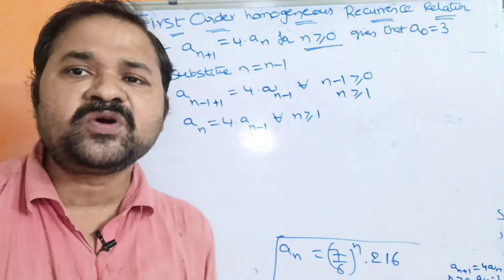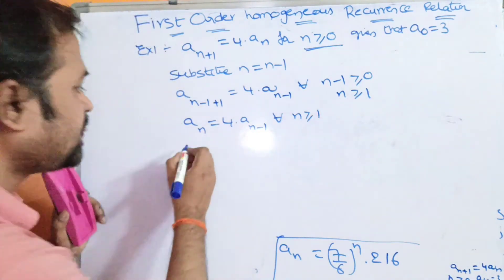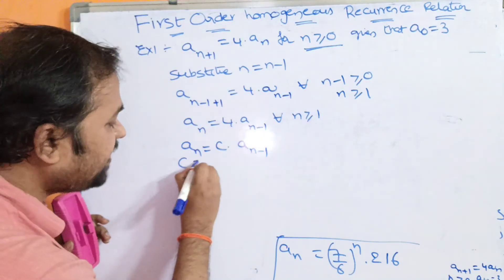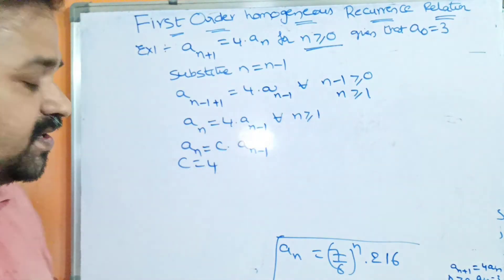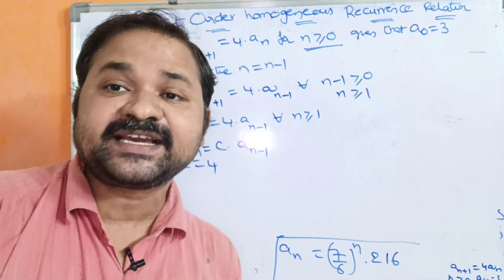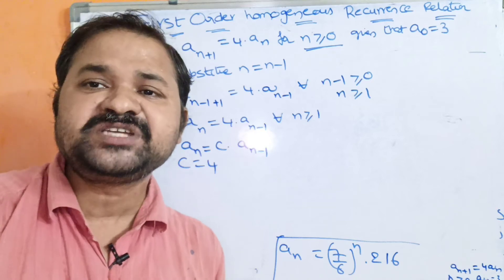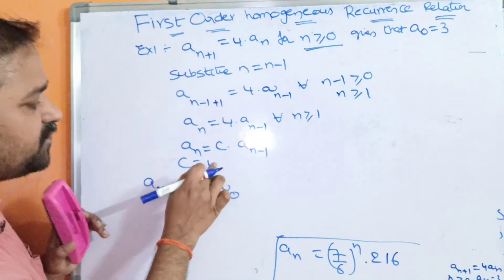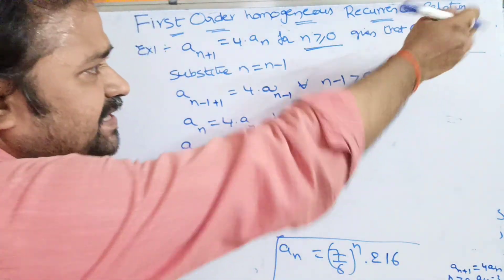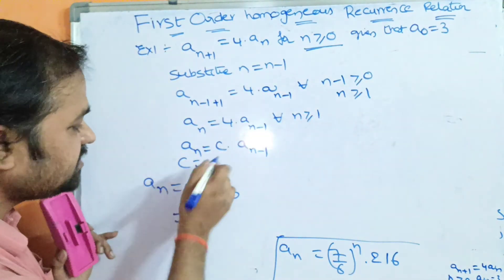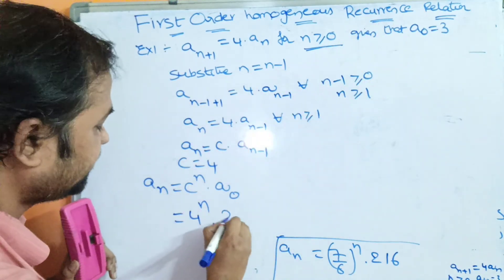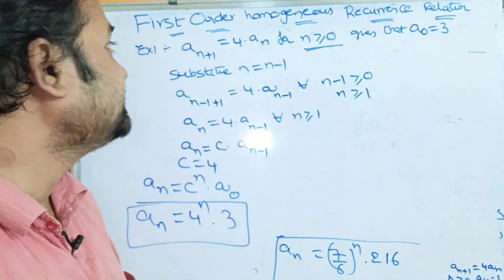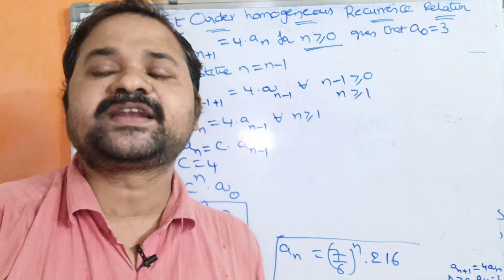On comparison with AN = C·AN−1, we get C = 4. The general solution is AN = C^N · A0. Since C = 4 and A0 = 3, the general solution is AN = 4^N · 3. In this way, we can solve first-order homogeneous recurrence relation problems.